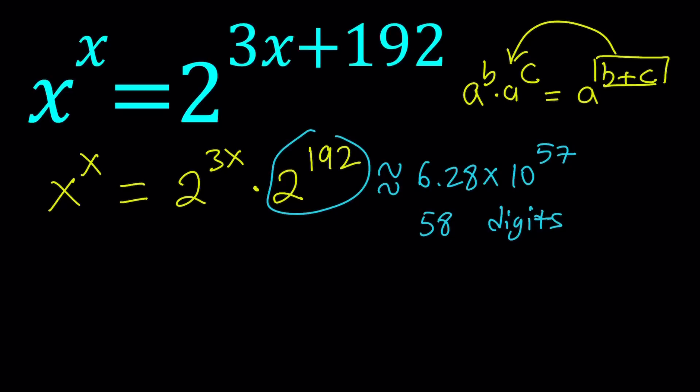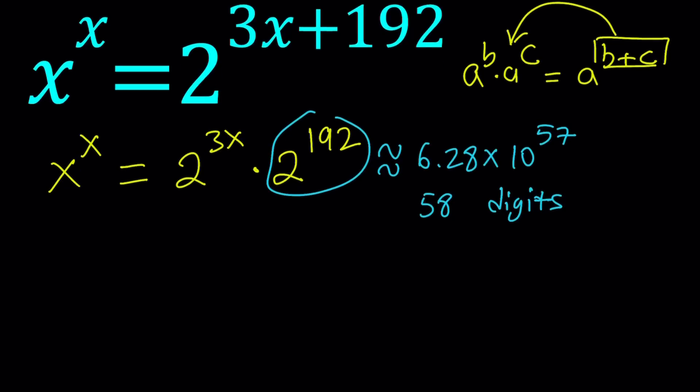So this is a number with 58 digits, a very large number. And you can read it as 6 octadecillion. Such an interesting name, right?